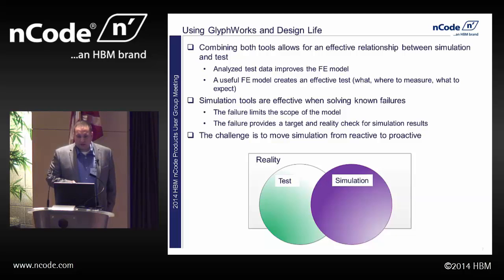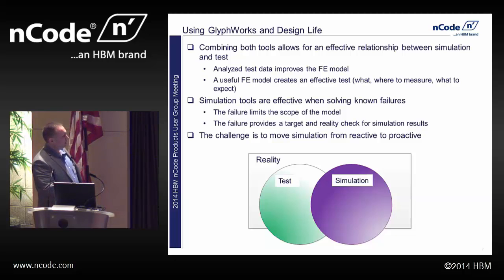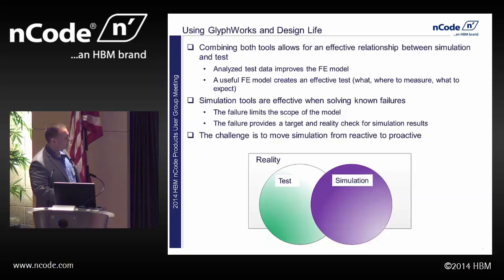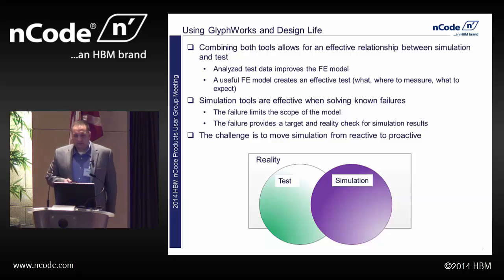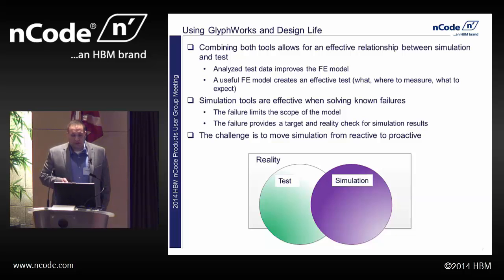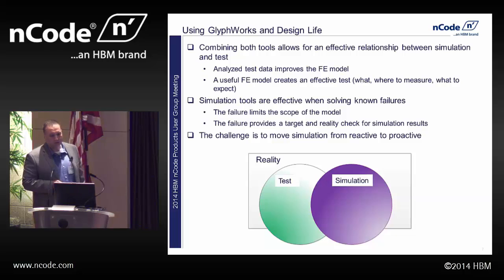The thing about engineering is you can't really be a post-modern engineer — you have to deal with reality. Things like campaign speeches, New Year's resolutions, and budgets exist outside of reality a lot of times, and you would hope your test and simulation groups operate within reality. Combining both Design Life and Glyphworks allows for an effective relationship between simulation and test. The analyzed data improves the FEA model. Usually you can't use raw test data directly — it needs to be processed, and Glyphworks can get it ready for FEA. A useful FEA model creates an effective test: it tells you what to measure, where to measure, what to expect, and where to place transducers.